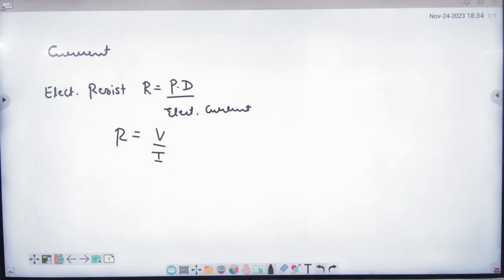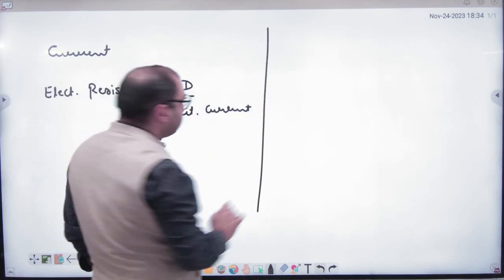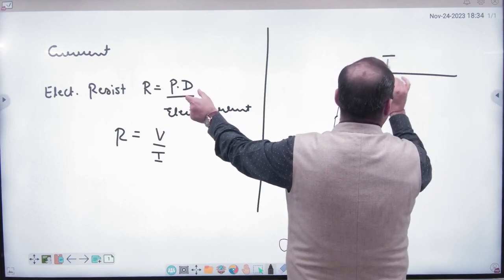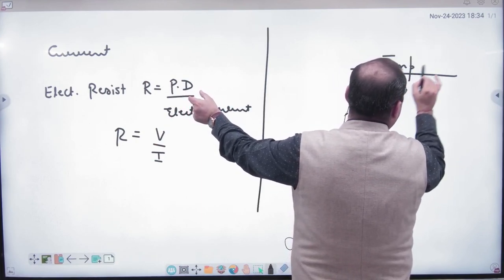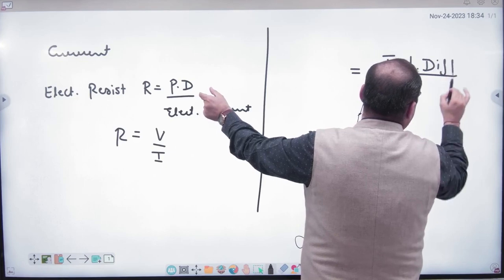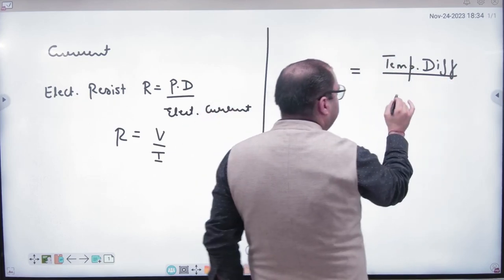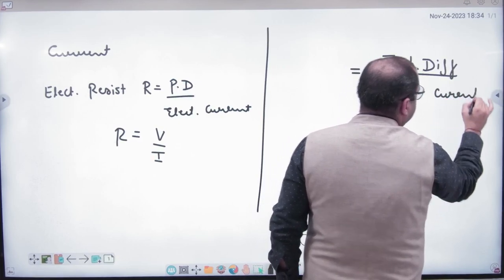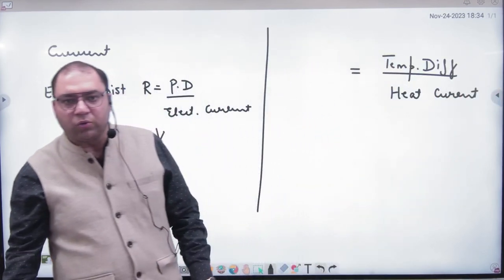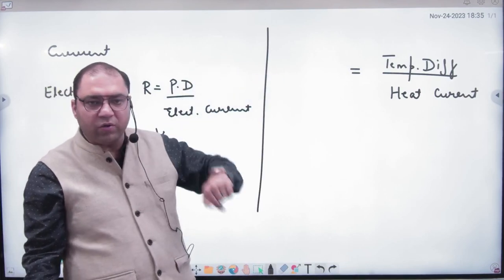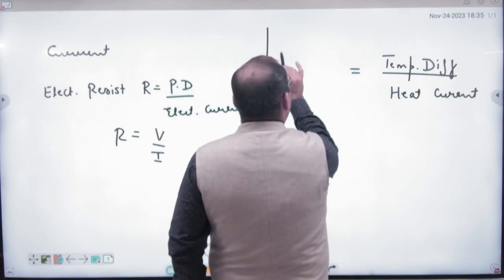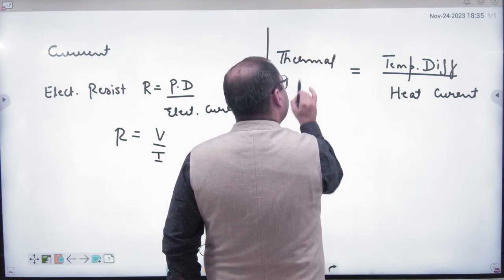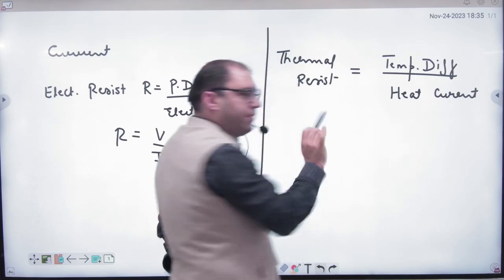Similarly, in this chapter, the potential difference, what term will I use? Temperature difference. Temperature difference divided by electric current, what will I put? Heat current. So if I divide the temperature difference from heat current, then I will have a resistance. But this resistance is called thermal resistance. I made the same pattern.